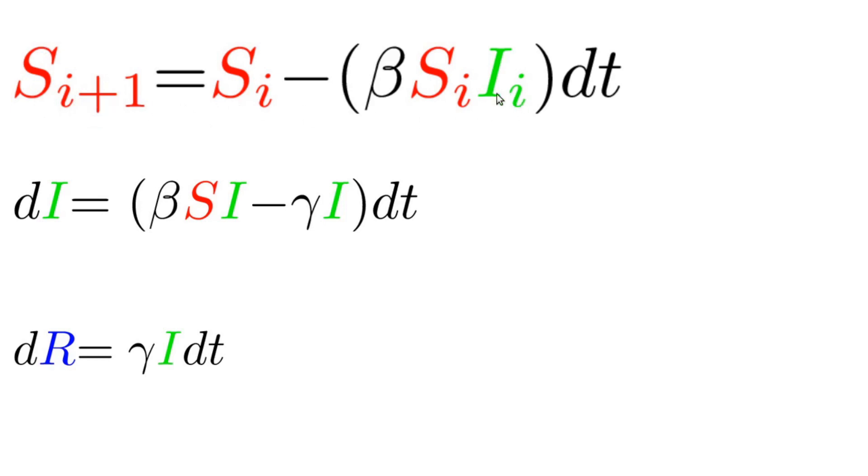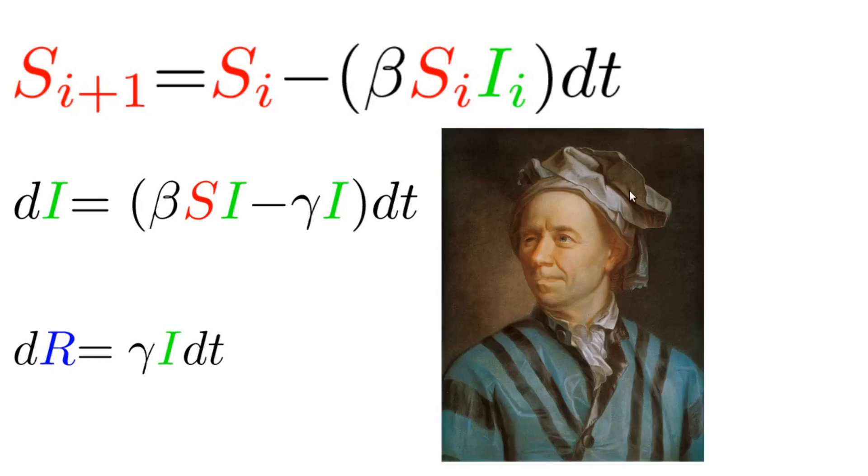This method of using the current day's information to extrapolate a value for the future based on the slope that we're estimating linearly is called the forward Euler method, named for this guy, Leonhard Euler. You know what this hat always reminds me of? Compile your chicken! Anyway,